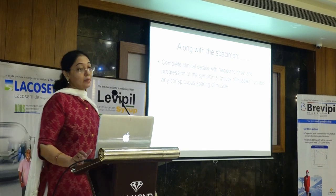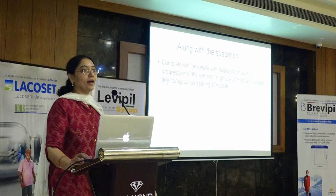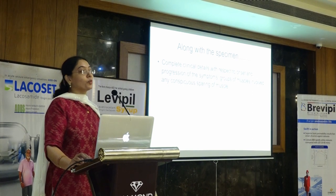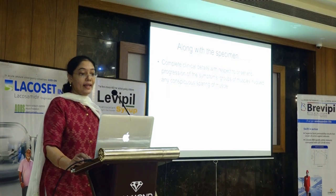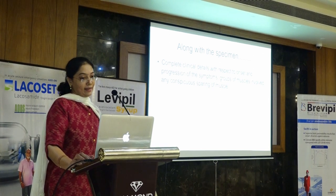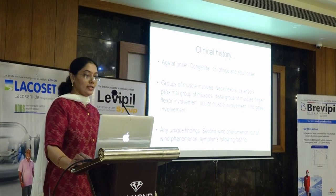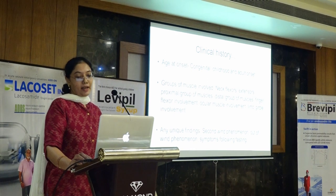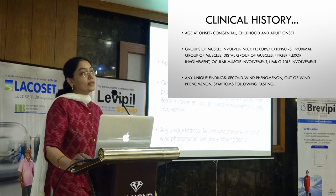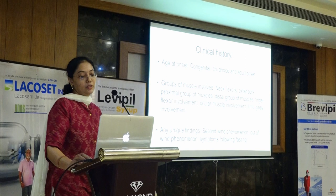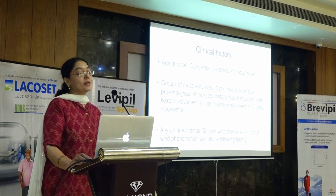That was about the specimen. Is specimen alone enough? Not at all. We require complete clinical details with respect to onset, progression, group of muscles involved, any specific pairing, or any feature that stands out. Age at onset matters — whether it is congenital, like congenital myopathies occurring at infancy such as floppy infant syndrome, or severe metabolic myopathies presenting at infancy, whether it is childhood disease, or adult onset — this gives us a hint as to what tests we should be anticipating.